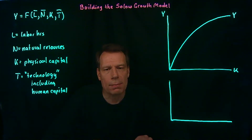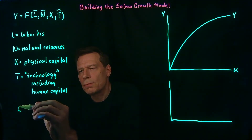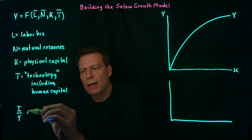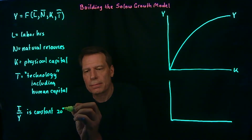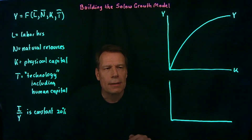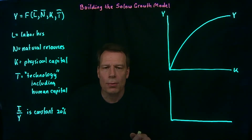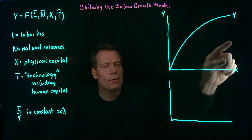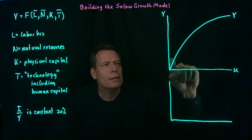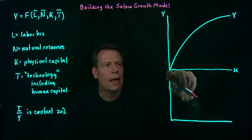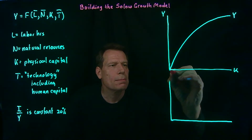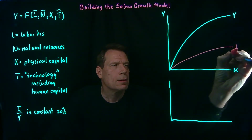Next, we're going to think about investment. We're going to assume that investment as a share of GDP is constant — suppose it's like 20%. That means that as GDP goes up, investment goes up, but investment is always 20% of GDP. To draw the investment relationship, we simply take 20% of the GDP curve at every point, so we get the same shape, just lying lower in the graph.